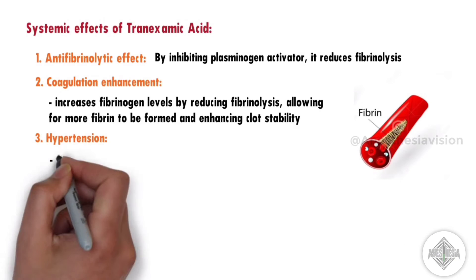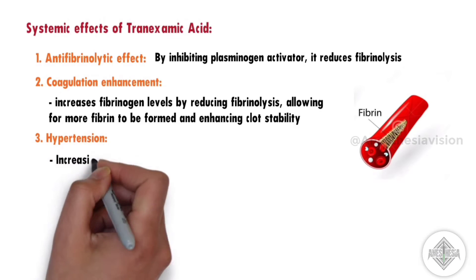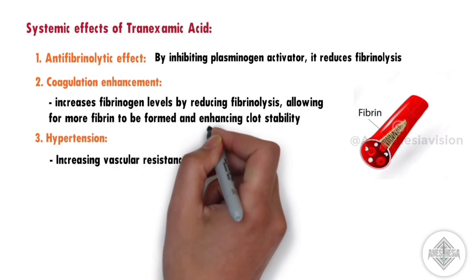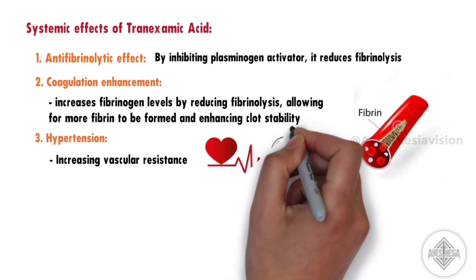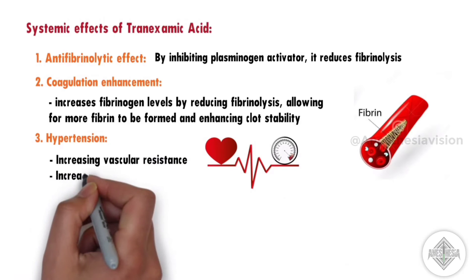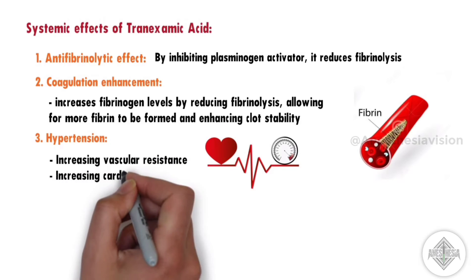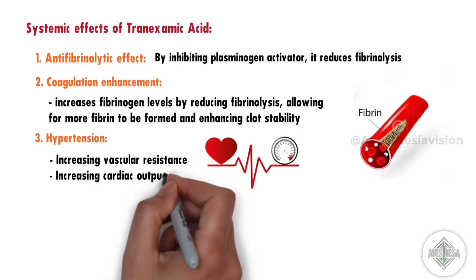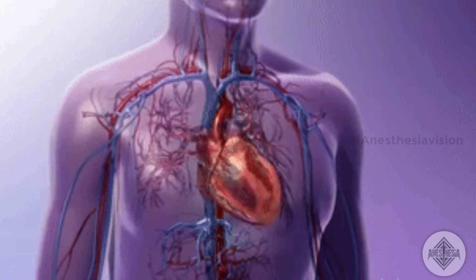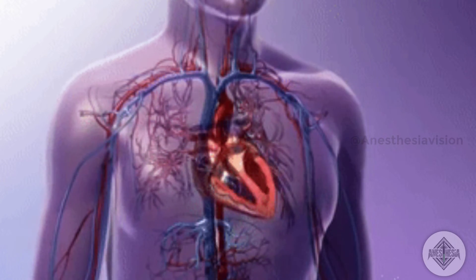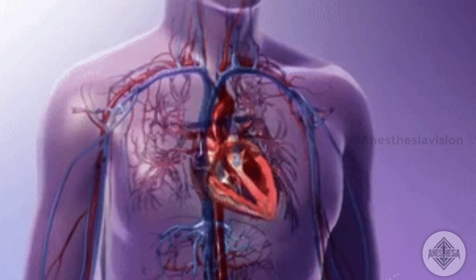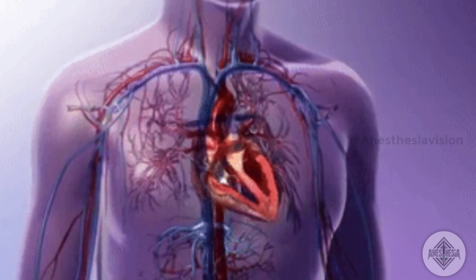Hypertension — tranexamic acid increases vascular resistance by constricting blood vessels, increasing resistance to renal blood flow. Additionally, tranexamic acid may increase heart rate and contractility, leading to increased cardiac output, which also contributes to hypertension.